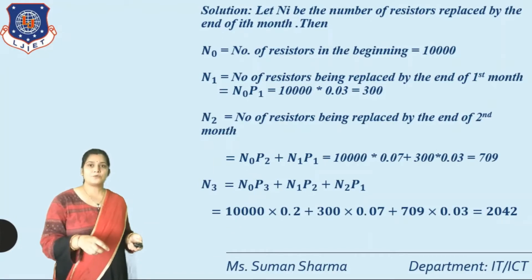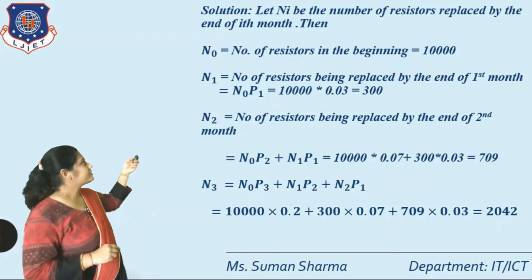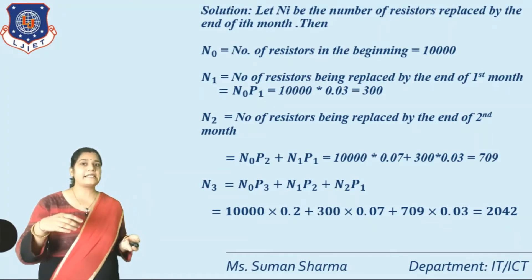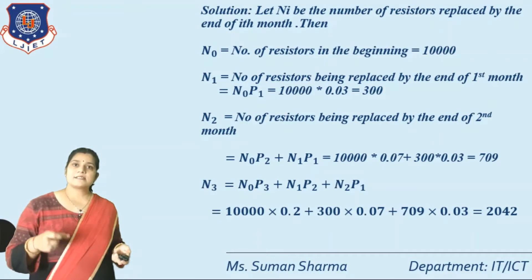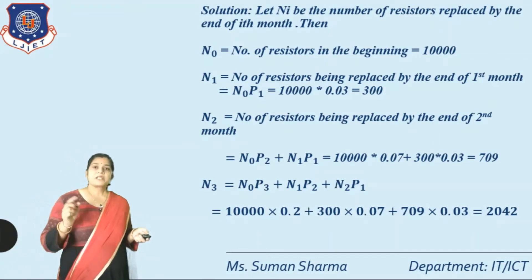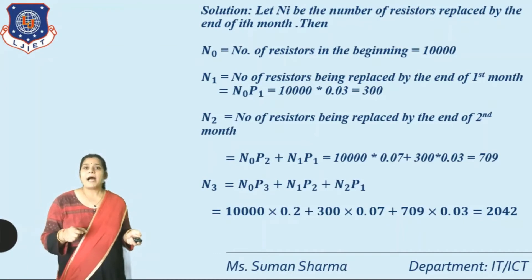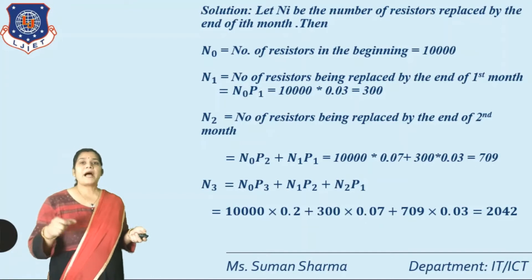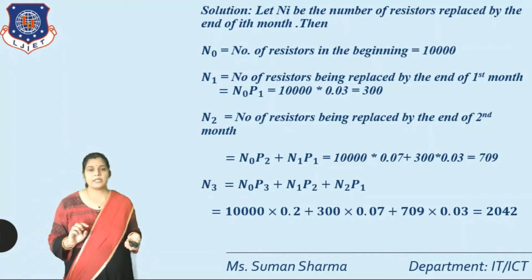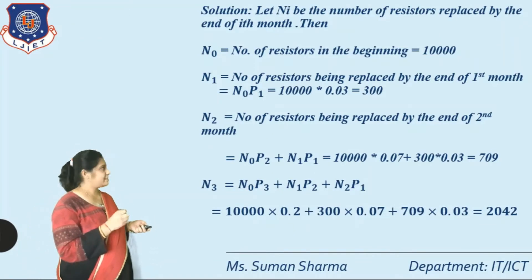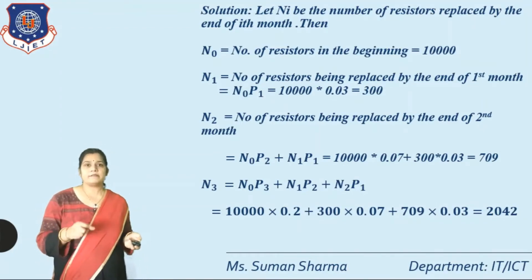N0 is the number of registers in the beginning, so N0 = 10,000. N1 is the number of registers replaced by the end of the first month. The formula is N1 = N0 × P1 = 10,000 × 0.03 = 300.